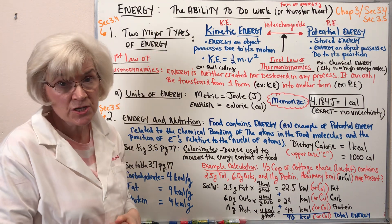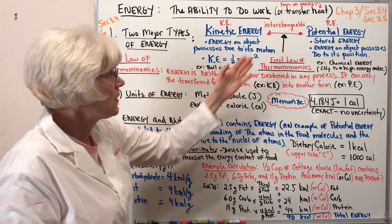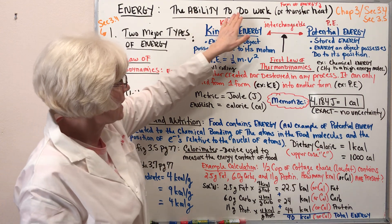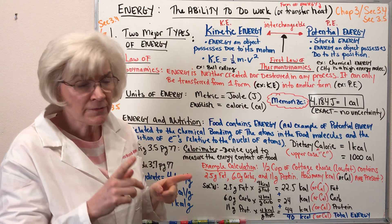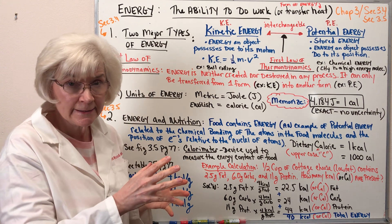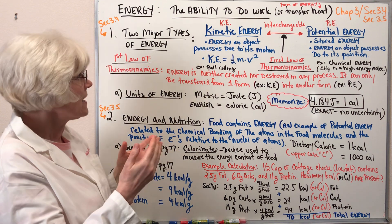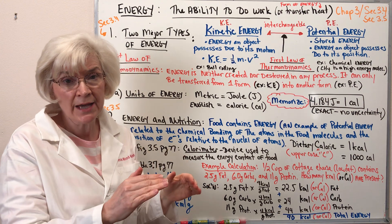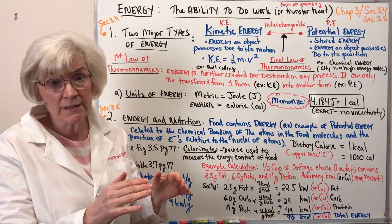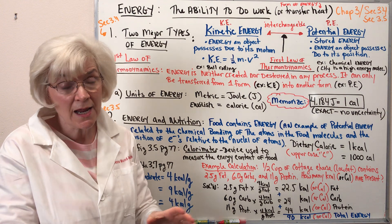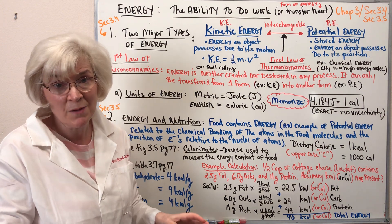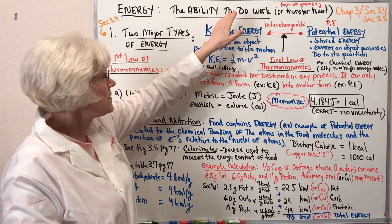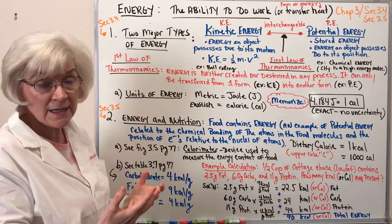A definition of energy: the ability to do work or transfer heat, which itself is a form of energy. Notice that this definition doesn't really say what energy is — it describes what it does. Once you get to the fundamental level of things, trying to define terms like matter and energy is difficult because you can't take them apart into any smaller topics. They form the basis of our reality, so we content ourselves with a description: energy is the ability to do work.